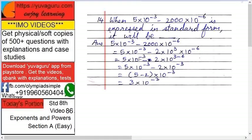Now 10 raised to minus 3 can be taken as common. So 5 minus 2 into 10 raised to minus 3. That is 3 into 10 raised to minus 3. That is the required answer. This is the standard form. Standard form means there should only be one digit and remaining everything in 10 raised to something.